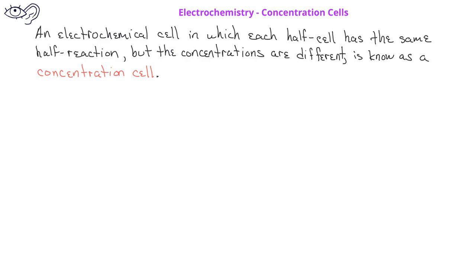So for example, we could have an electrochemical cell in which the two half reactions or half cells involve the copper 2 plus copper half reaction, but the copper ions in each half cell will have different concentrations.